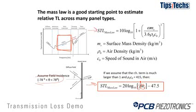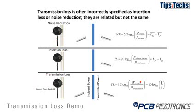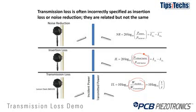For this demonstration we'll actually be demonstrating insertion loss, which is a slightly different measurement than transmission loss. Transmission loss is a ratio of power. Insertion loss is a ratio of pressure with and without a barrier and is much easier to demonstrate. The fundamental loss mechanism in the material is the same — it's just a different measurement technique. So we'll be showing the demonstration of insertion loss.